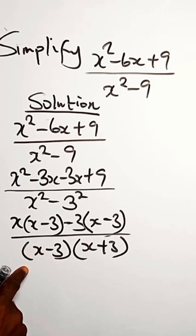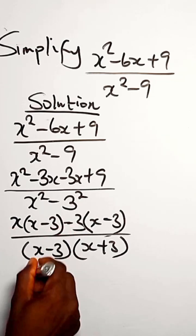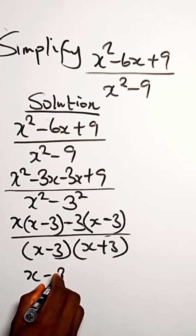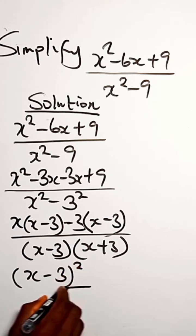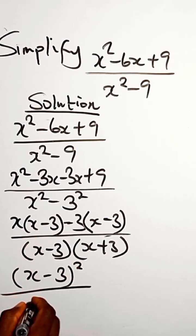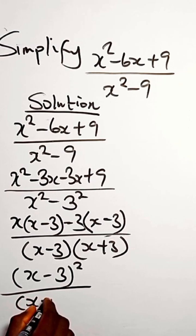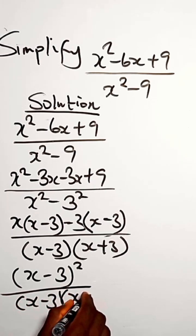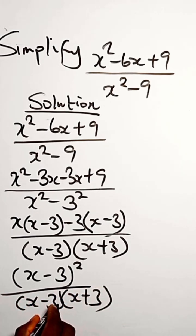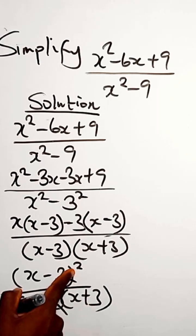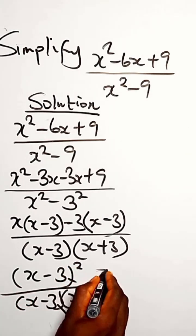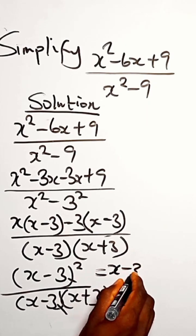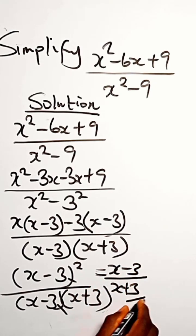So for this to be x minus 3 times x minus 3 squared for the numerator, then we have this as x minus 3 times x plus 3. You can easily take out one part of this. So we have x minus 3 divided by x plus 3.